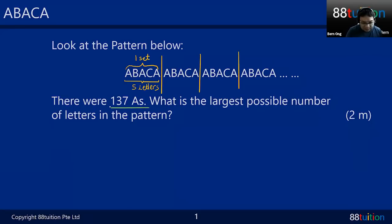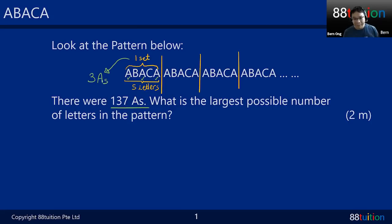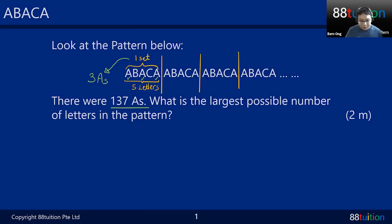Here comes the clue: there were 137 A's. Inside one set of A-B-A-C-A, how many A's are there? One, two, three — there are three A's in one set. So every abaca set has three A's.